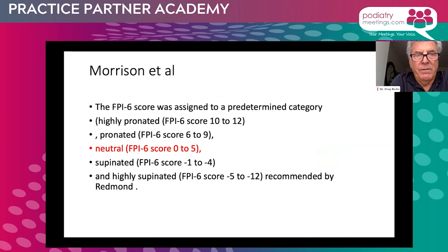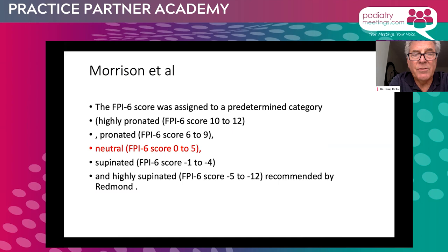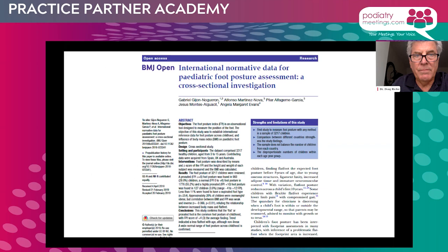In this article from Morrison, they summarized that an accumulated score of zero to five would be a so-called neutral foot — neither pronated, which is a score of six to nine, nor supinated, which is minus one to minus four. We want to keep in mind that this neutral foot falls in the category of zero to five with the Foot Posture Index rating system.